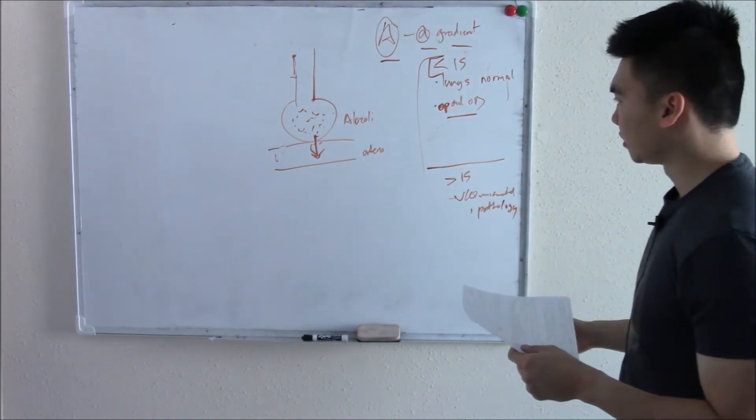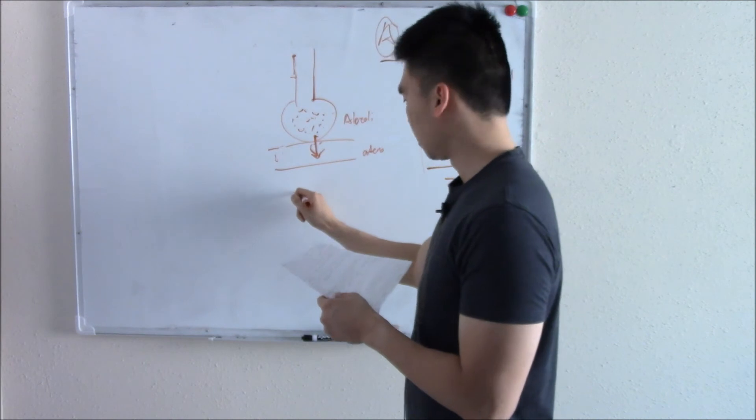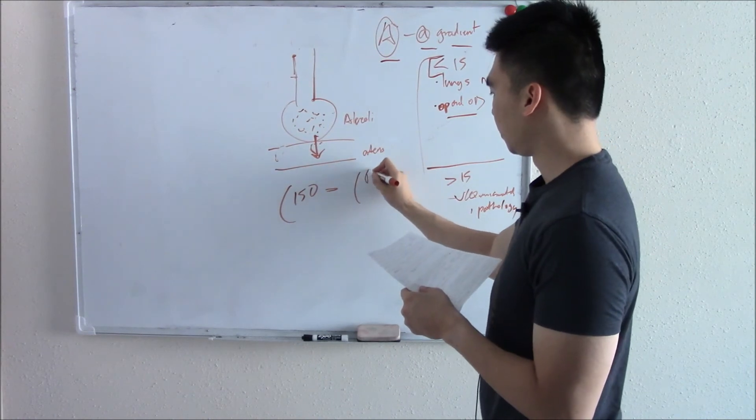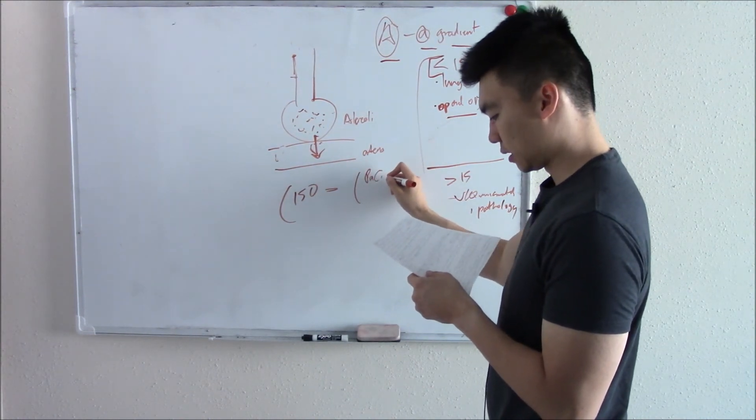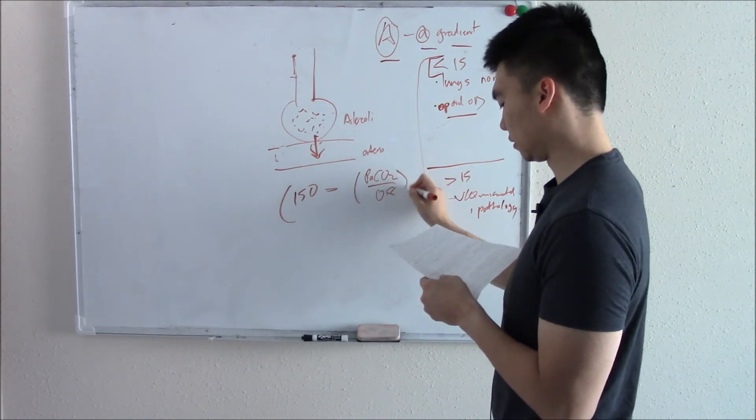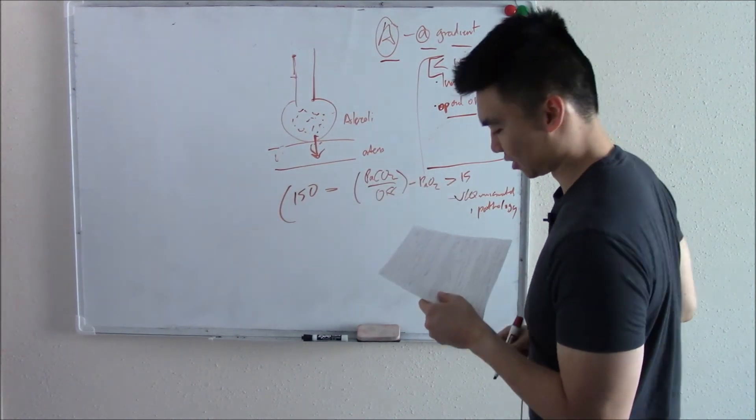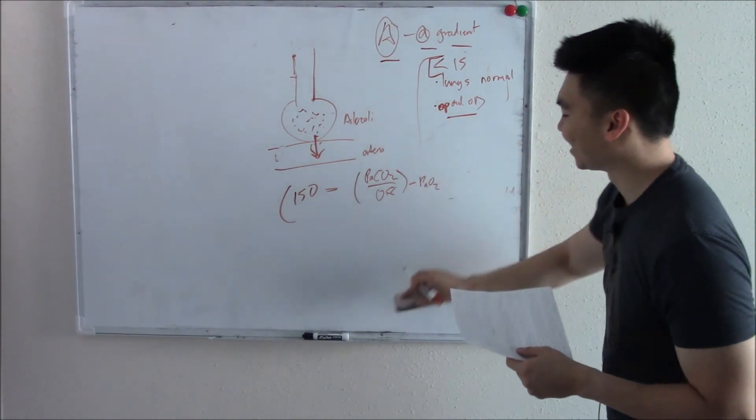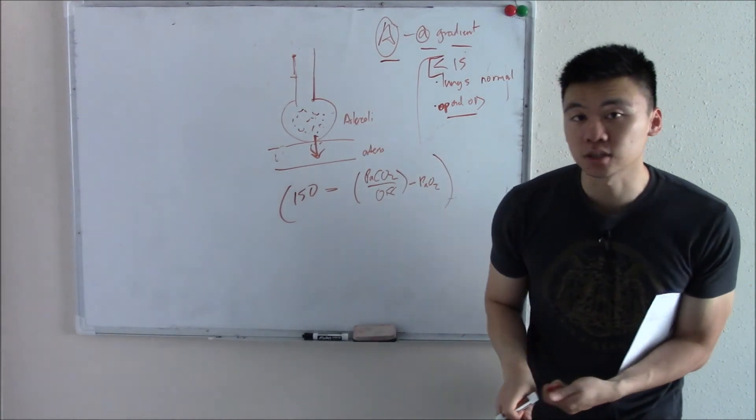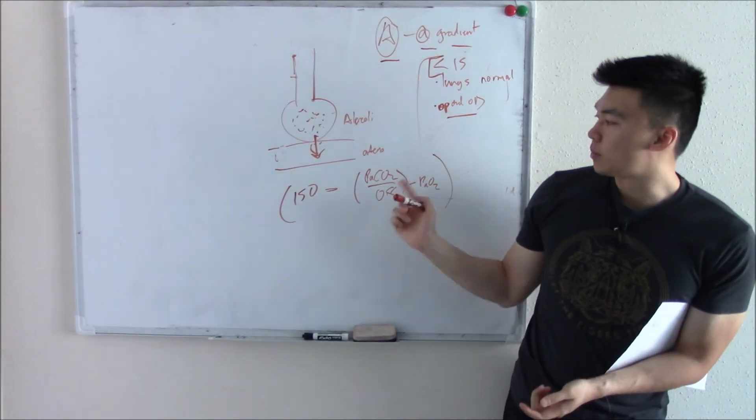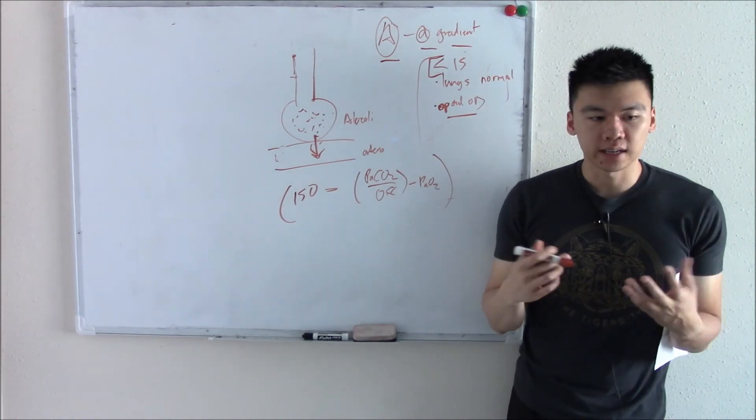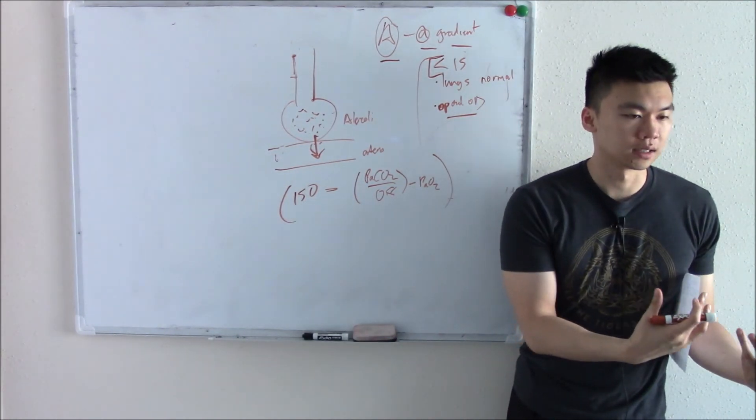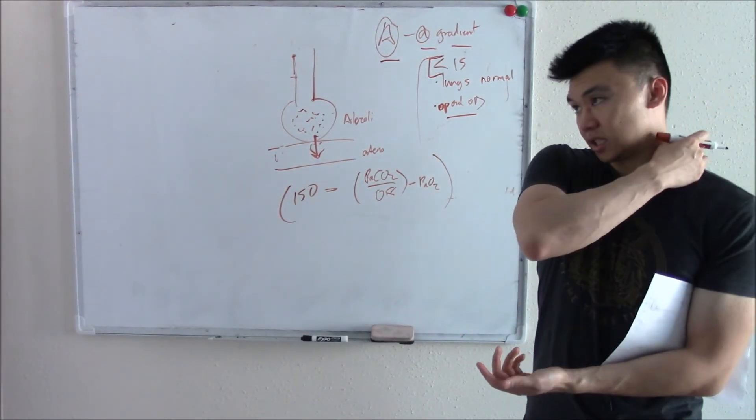What is the equation to check the AA gradient? It is 150 minus the partial pressure of CO2 divided by 0.8 minus the partial pressure of oxygen. That seems quite complicated and I agree. I'll have a practice question in my notes. Make sure you do the practice question. Check the AA gradient and you'll be able to find out is it a problem with the lungs or is it not a problem with the lungs.